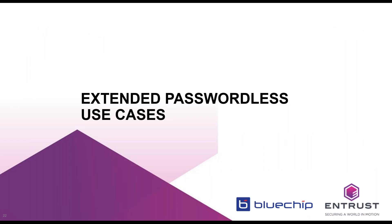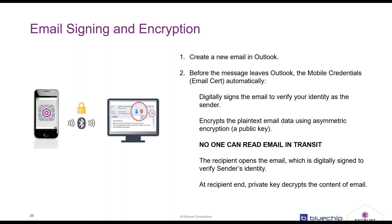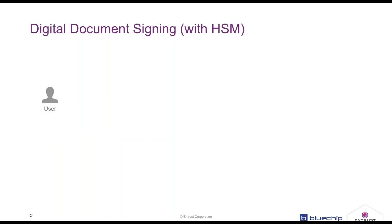Now for extended passwordless use cases — all the PKI use cases. Email signing and encryption: smart credentials on mobile can be used to encrypt emails using an email certificate for sending securely over the internet. As you send an email it automatically digitally signs and encrypts the plain text email data using asymmetric encryption with a public key, so no one can read this email in transit. It is non-repudiation. Once the recipient opens the email it is digitally signed and they can decrypt it.